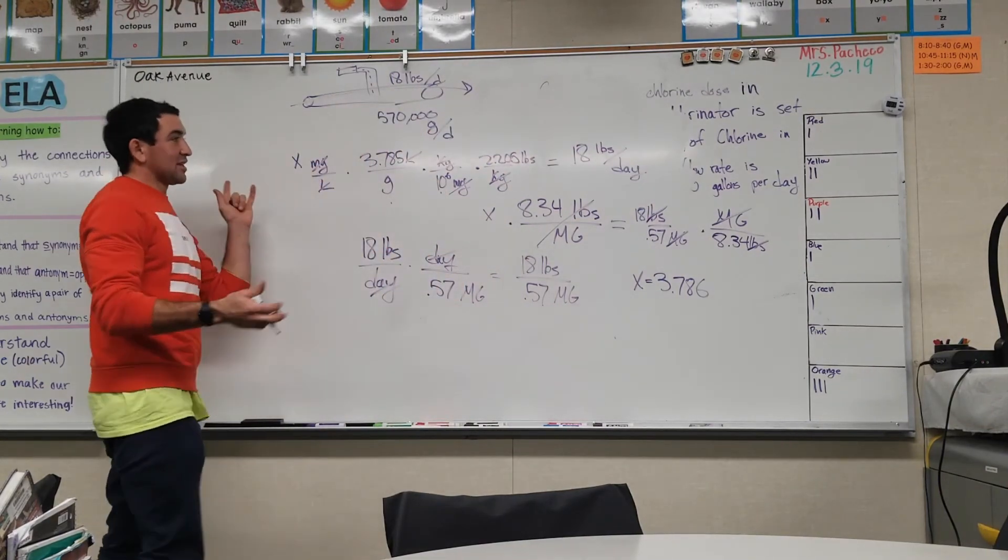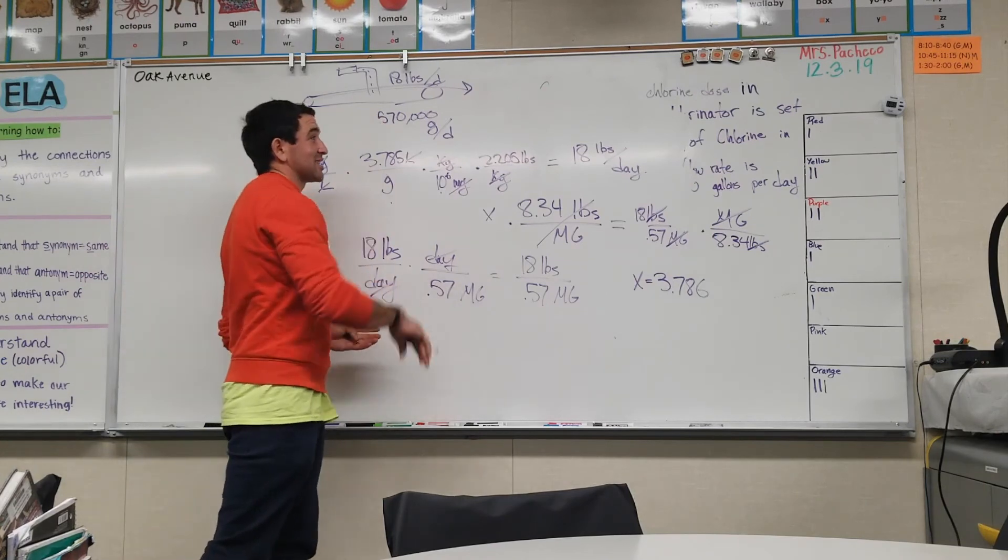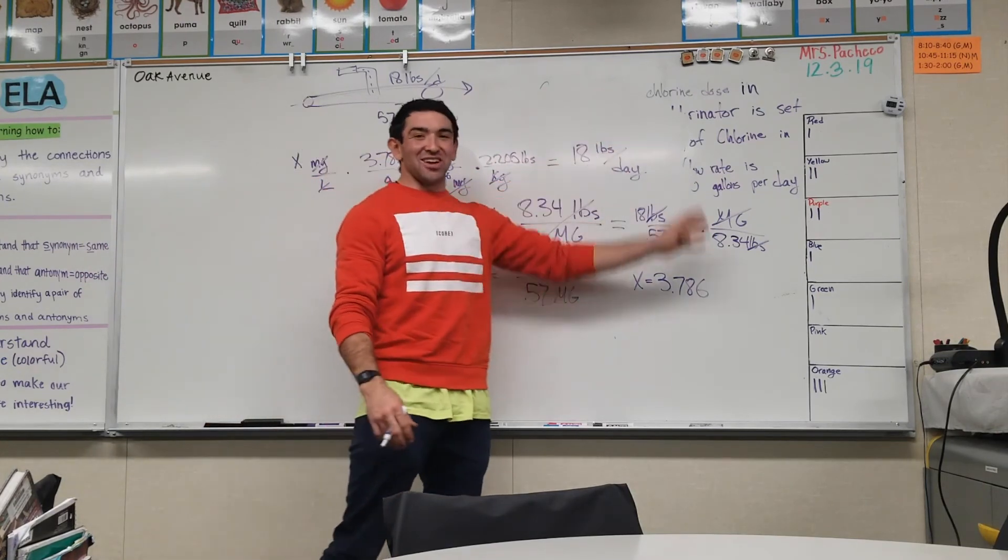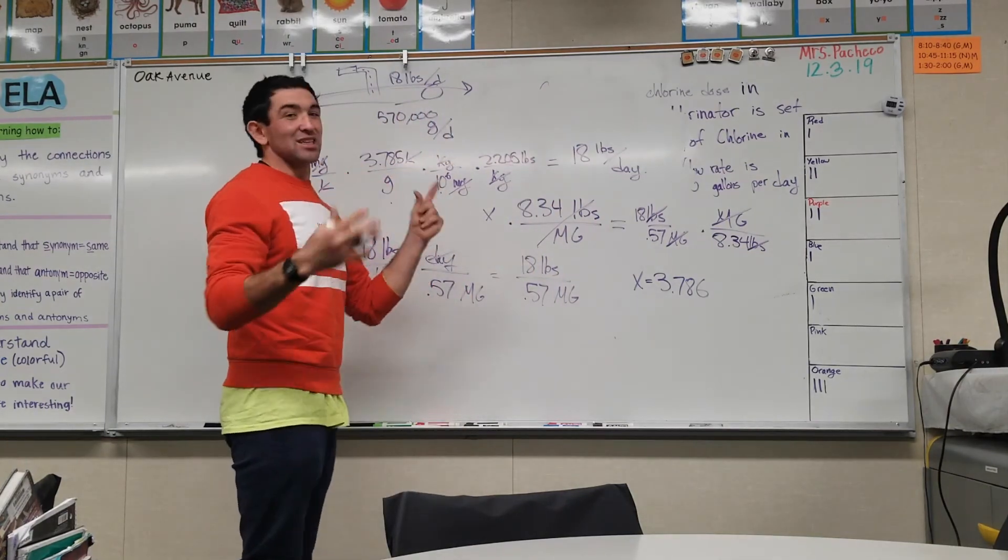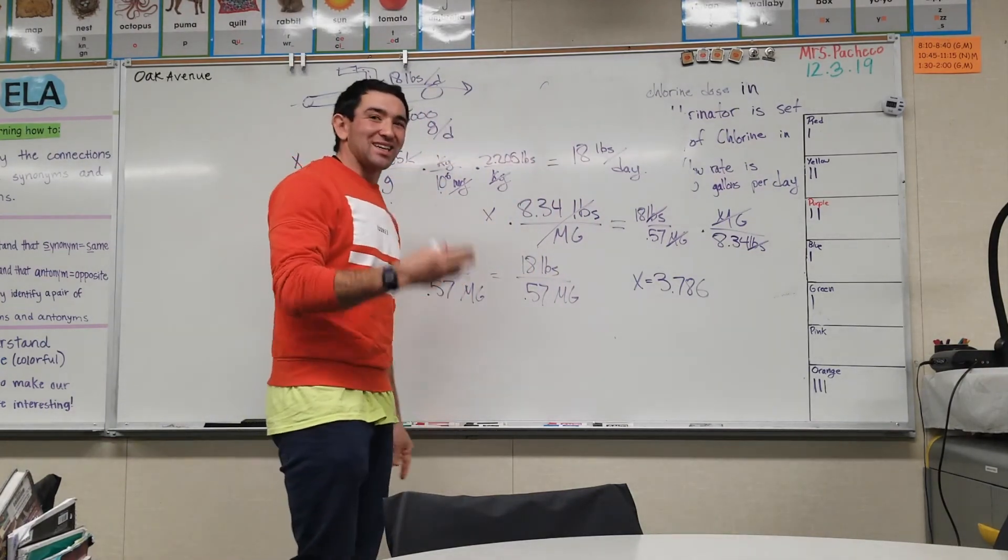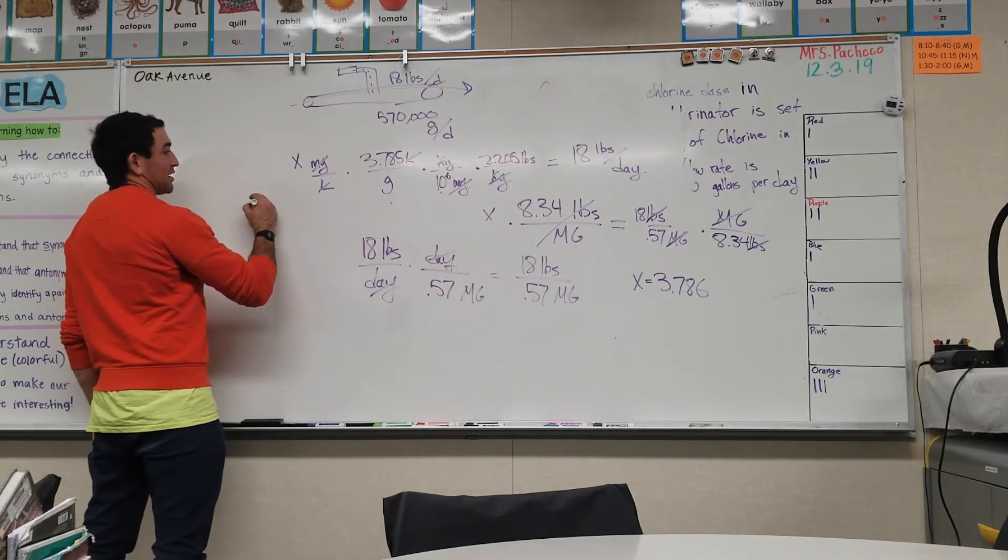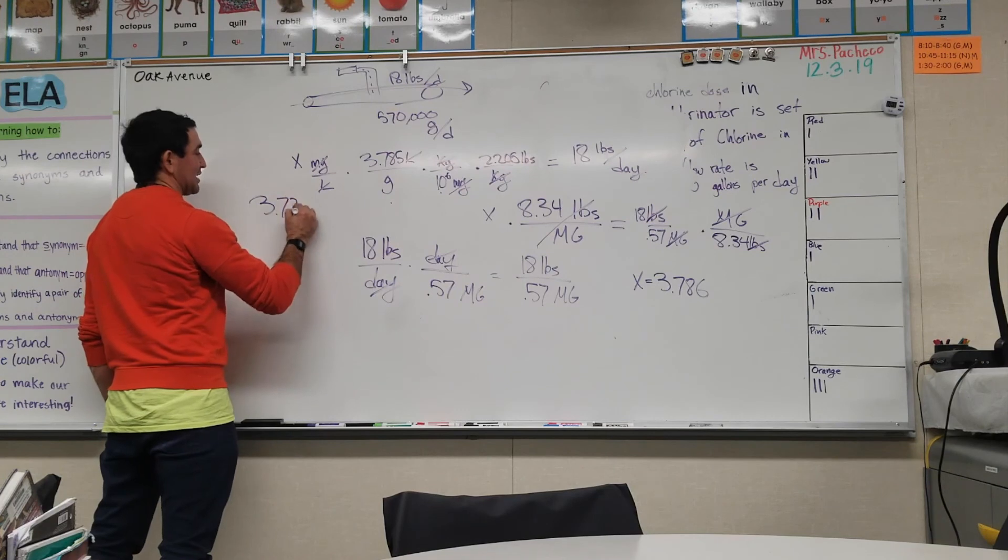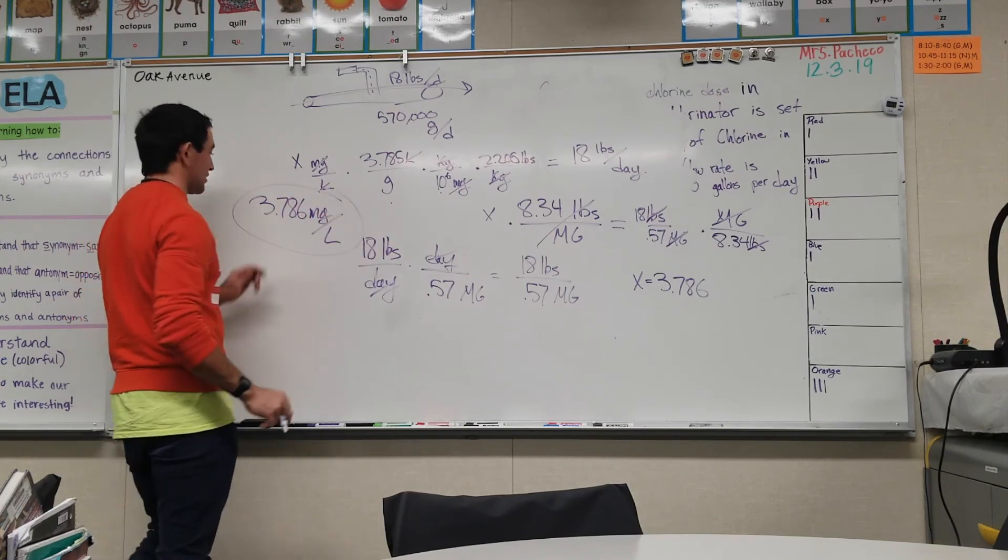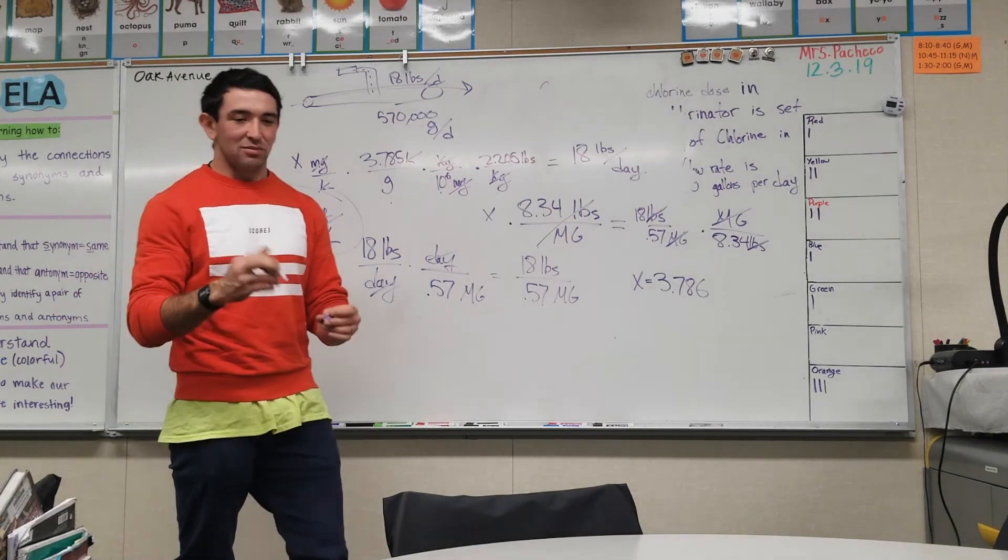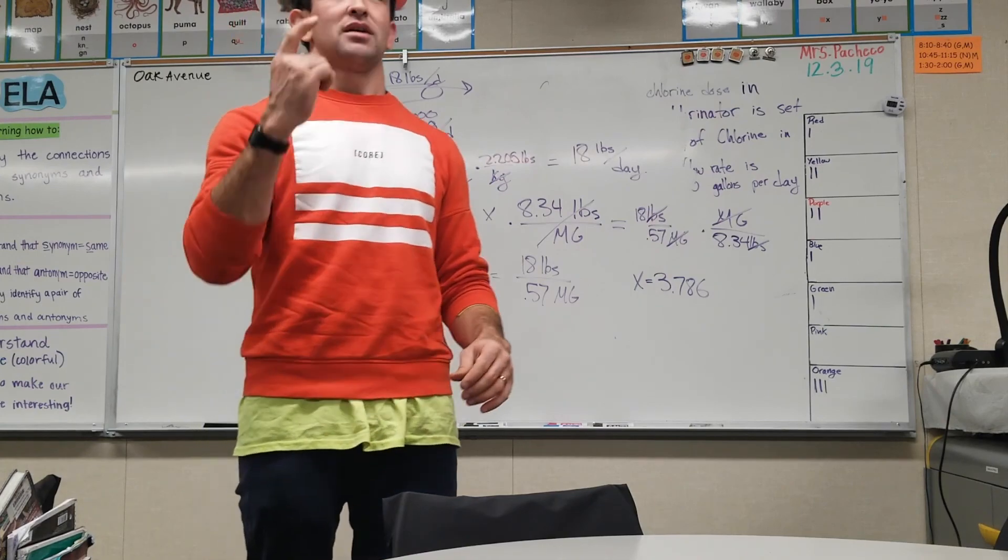When you plug x in right there, that's your milligrams per liter, and that's what we wanted in the beginning. The question wanted us to find milligrams per liter, how many milligrams per liter is in this water, how chlorinated is this water. Now we can tell them this water is 3.786 milligrams per liter chlorine. There's 3.786 milligrams of chlorine for every liter of water, and that's that.